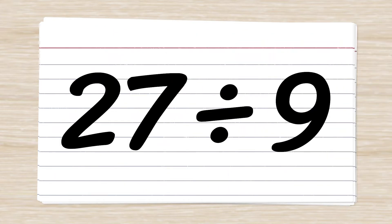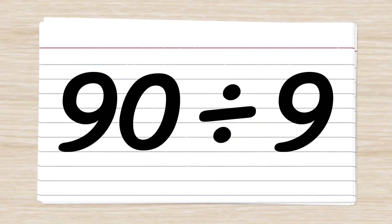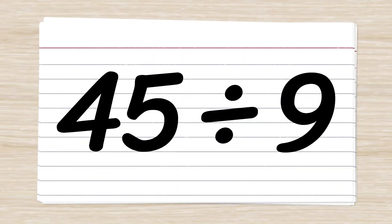27 divided by nine. Three. 36 divided by nine. Four. 90 divided by nine. Ten. 45 divided by nine. Five.